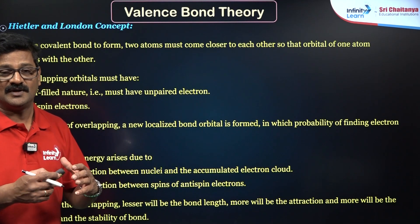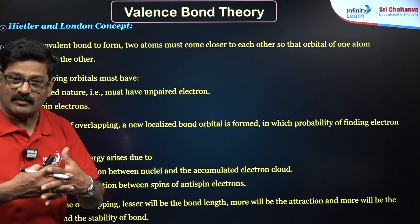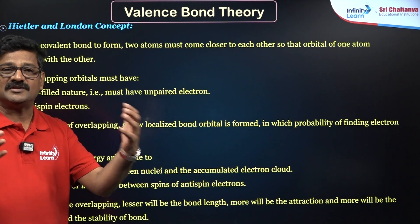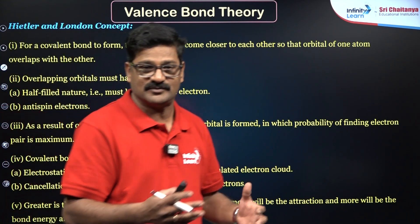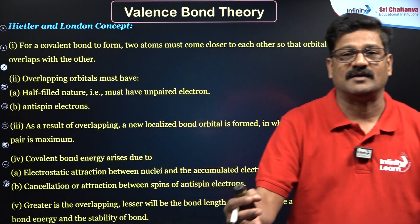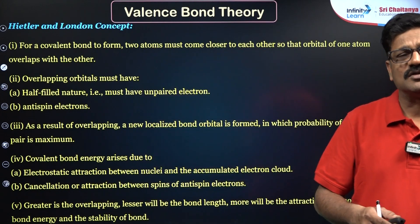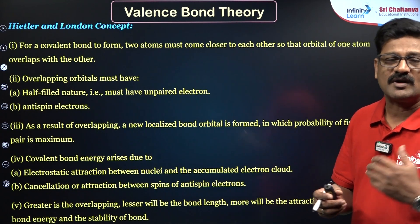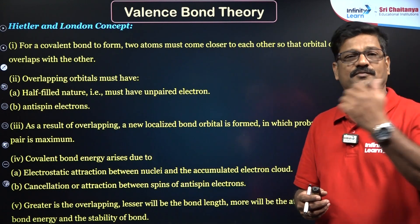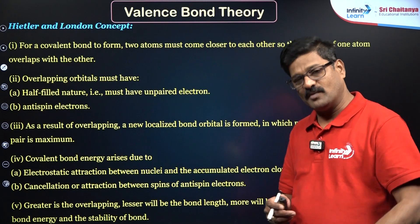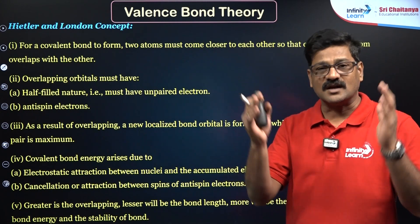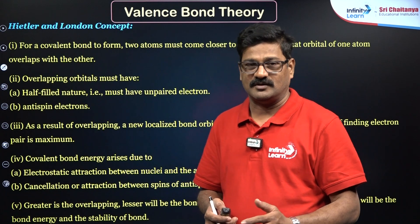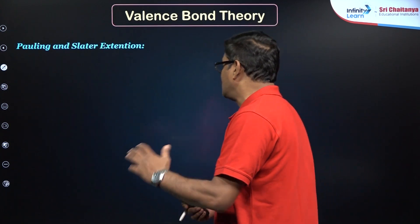And as a result of overlapping, a new localized bonding orbital is formed in which the probability of finding an electron between the atoms' nuclei is maximum. And also covalent energy, the covalent bond energy arises due to electrostatic attraction forces and the repulsion between the electrons of the bonded atoms and also the spin and anti-spin electrons. Heitler and London wanted to say, greater the extent of overlapping, stronger is the bond. More extent of overlapping, more is going to be the electron cloud accumulated between the atoms, so that it is going to have the stronger bond. These overlappings are two types: coaxial overlapping, the bond formed along the axis, that is called a sigma bond, and collateral overlapping, sidewise overlapping, that is what you say a pi bond.